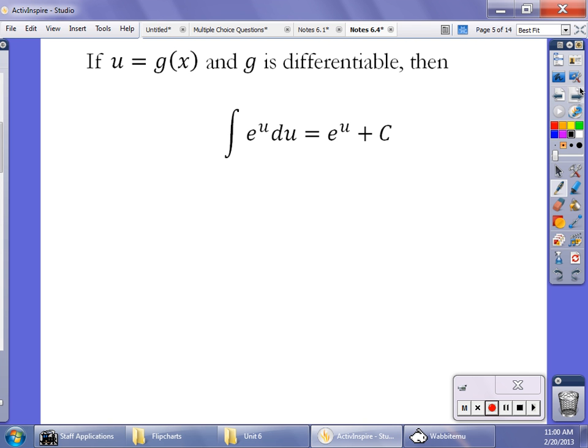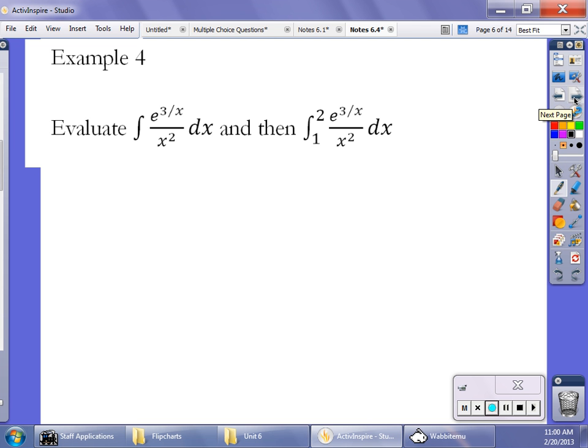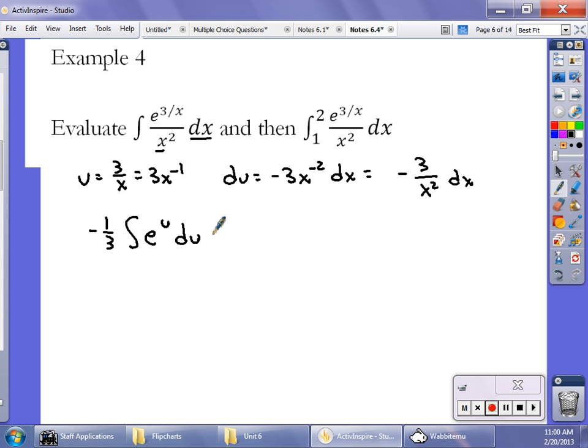So if we have something like this, then in our first example here, we're going to let u be 3 over x. So u is 3 over x or 3x to the negative 1. Then du is negative 3x to the negative 2 dx or negative 3 over x squared dx. And if that's true, then the x squared dx right there that I just underlined, that's negative 1/3 of du. So I have negative 1/3 times the integral of e to the u du, which is negative 1/3 times e to the 3 over x plus my constant.